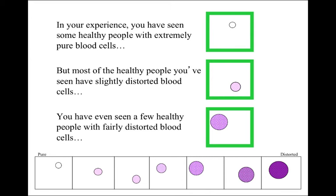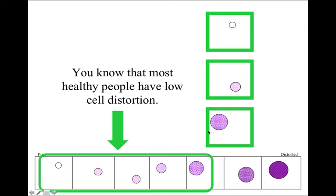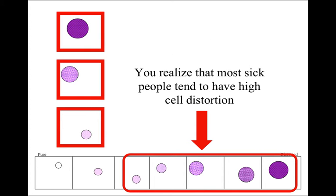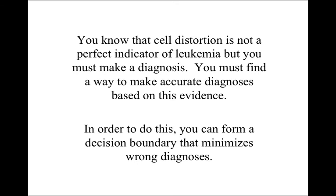In your experience, you have seen some healthy people with extremely pure blood cells, but most healthy people have slightly distorted blood cells, and you've even seen a few healthy people with fairly distorted blood cells. You know that most healthy people have low cell distortion. You have seen a few sick people with extremely distorted blood cells — that is usually the case with sick people — but most sick people you have seen have only fairly distorted blood cells, and you have even seen a few sick people with only slightly distorted blood cells. You realize that most sick people tend to have high cell distortion, but cell distortion is not a perfect indicator of leukemia and you must make a diagnosis.